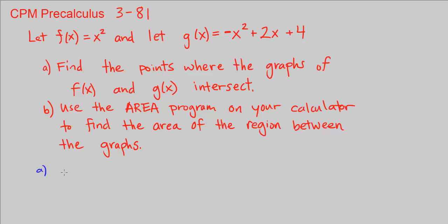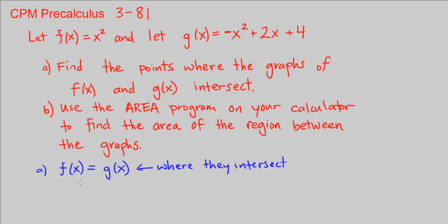Where they intersect, we know that the functions are equal to each other. So f of x is equal to g of x — that's where they intersect. Let's replace f of x with what it is, x squared, and g of x with what it is: negative x squared plus 2x plus 4.